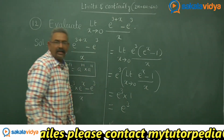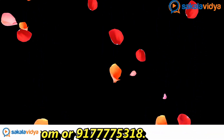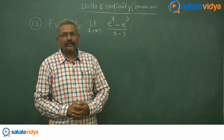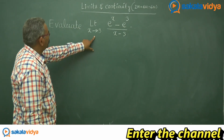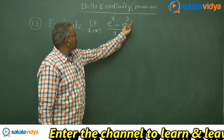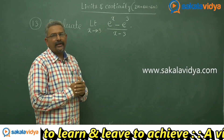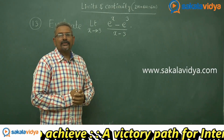So this equals to e cube — this is the answer. Let us do one more problem on limits. Let us evaluate limit x tends to 3, e power x minus e cube by x minus 3. Just take out e cube common and apply the limit, we will get the answer. Very simple — let us solve the problem.